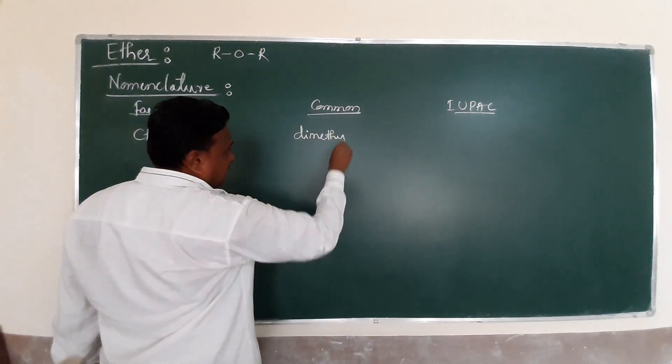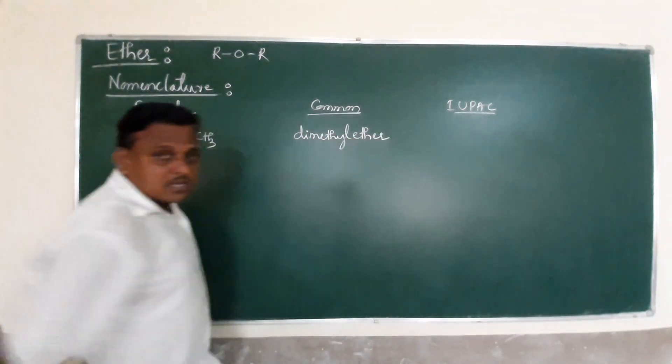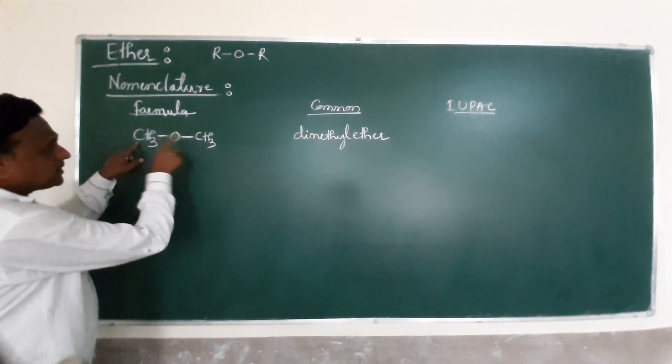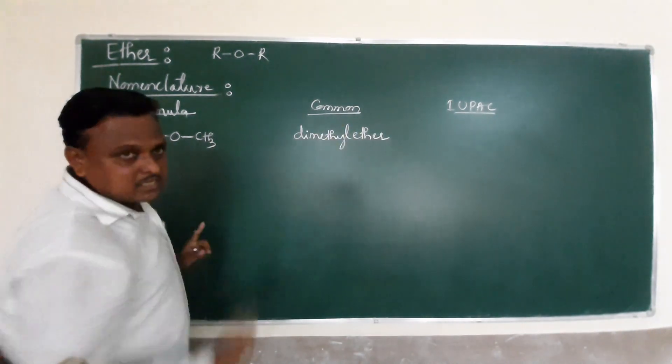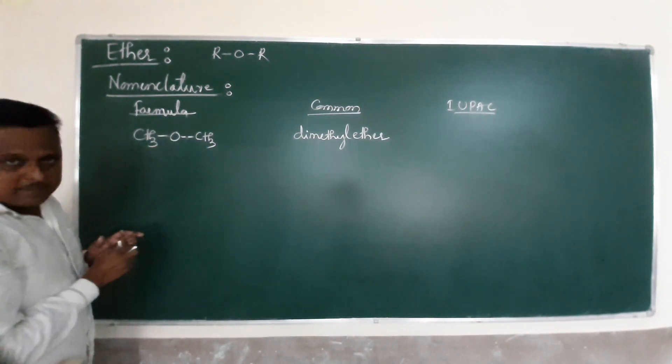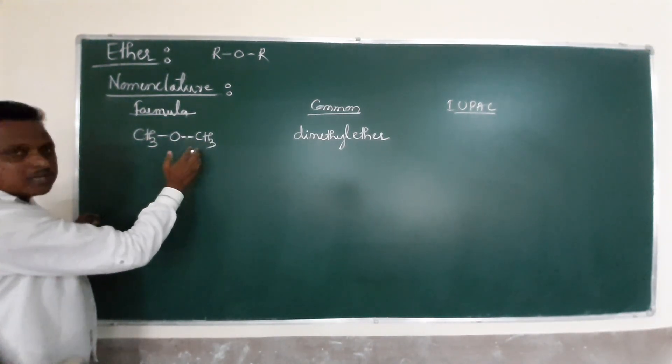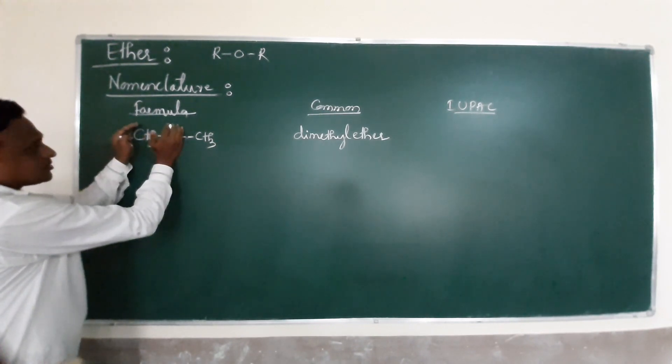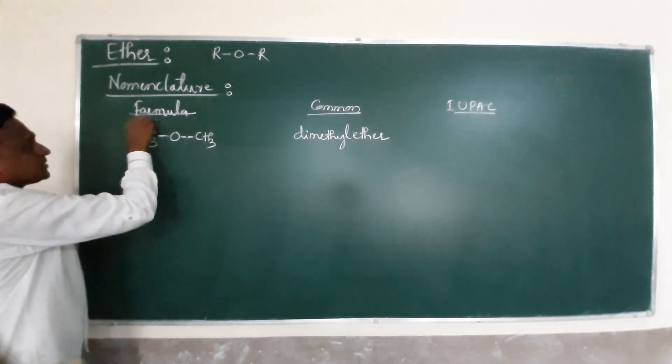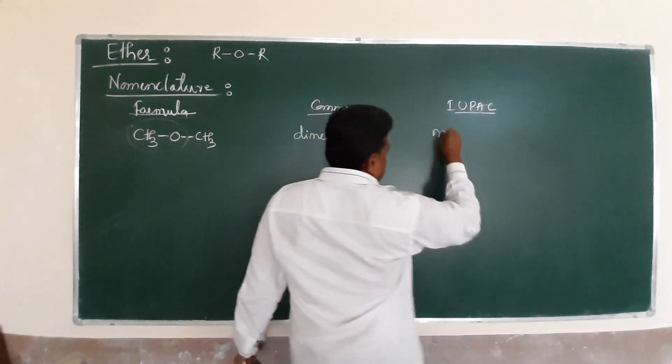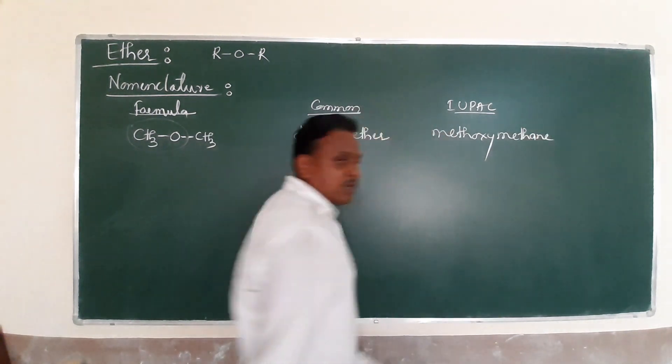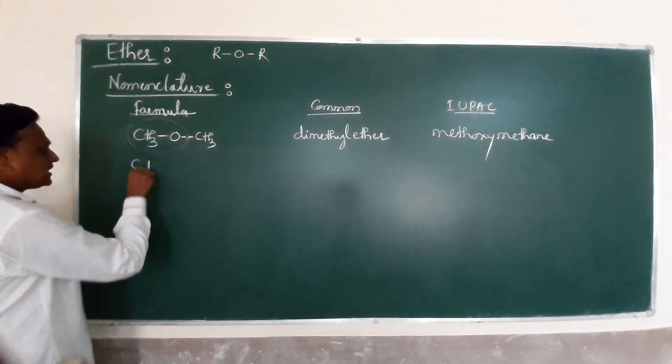The alkyl is methyl, functional group is ether, so the common name is dimethyl ether. IUPAC is very simple - this term is alkoxy, this term is alkane. The name is methoxy methane.